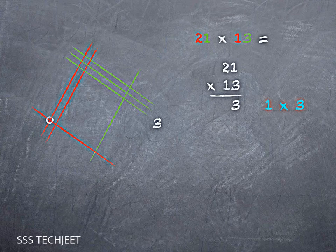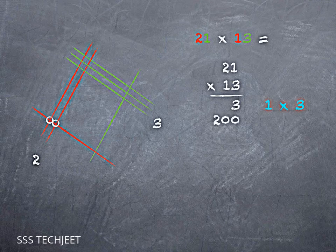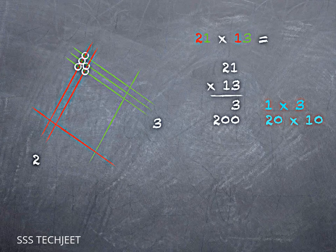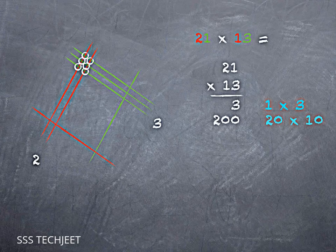On the left, if I count those two intersections, that's really two tens and one ten. So that 2 is not really a 2. It's a 200. 20 times 10.